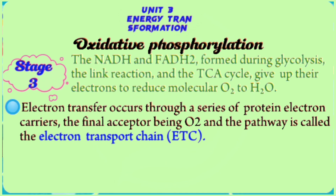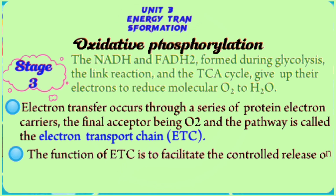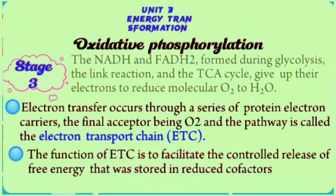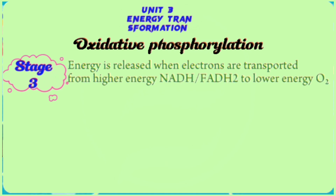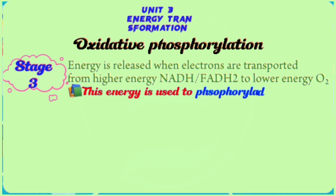The electron transfer occurs through a series of protein electron carriers, with the final acceptor being oxygen. This pathway is called the electron transport chain. The function of the electron transport chain is to facilitate the controlled release of free energy that was stored in the reduced cofactors during catabolism. Energy is released when electrons are transported from higher energy — NADH and FADH2 — to the lower energy acceptor, oxygen. This energy is used to phosphorylate ADP.